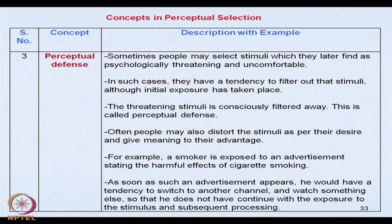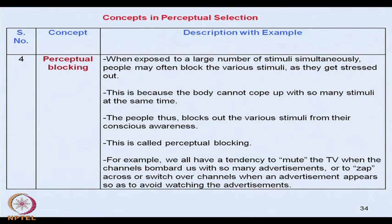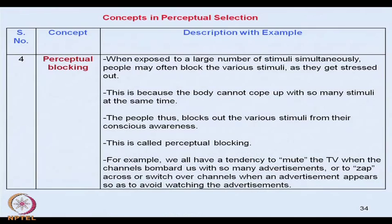Then we have perceptual blocking. When people are exposed to large amounts of stimuli, they block themselves — because as human beings and living organisms, we have a limited capacity to process stimuli. So people sometimes block out various stimuli. For example, when we are watching TV and are very tired of watching too many advertisements coming one after the other, we have a tendency to mute the TV, change the channel, or switch over to avoid watching these advertisements.